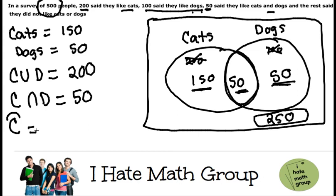basically, anyone that does not like cats, in this case, is going to be this area right here. Remember, 50 plus 250. So, the complement of cat is actually 300.